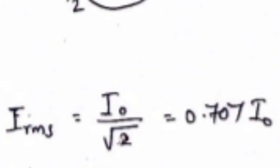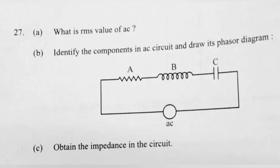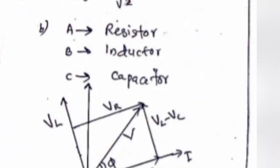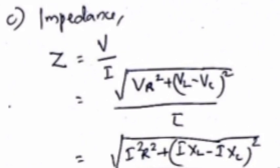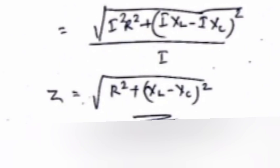The RMS value of AC: I_rms = I₀/√2 = 0.707·I₀. Components in an AC circuit with phasor diagram: (a) Resistor, (b) Inductor, (c) Capacitor. Impedance Z = V/I = √(VR² + (VL − VC)²) / I = √(R² + (XL − XC)²).